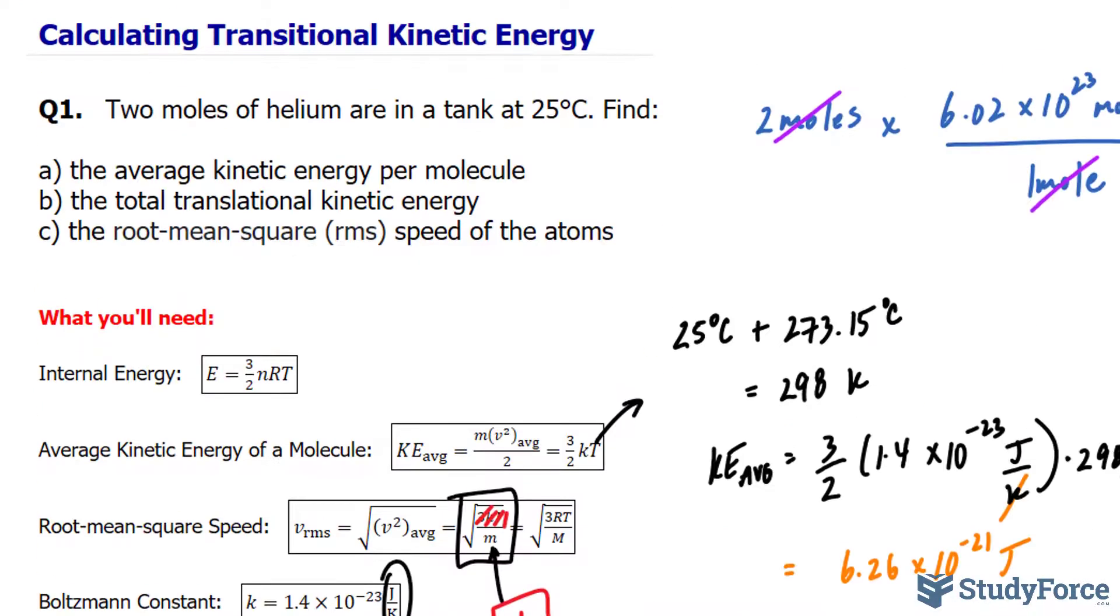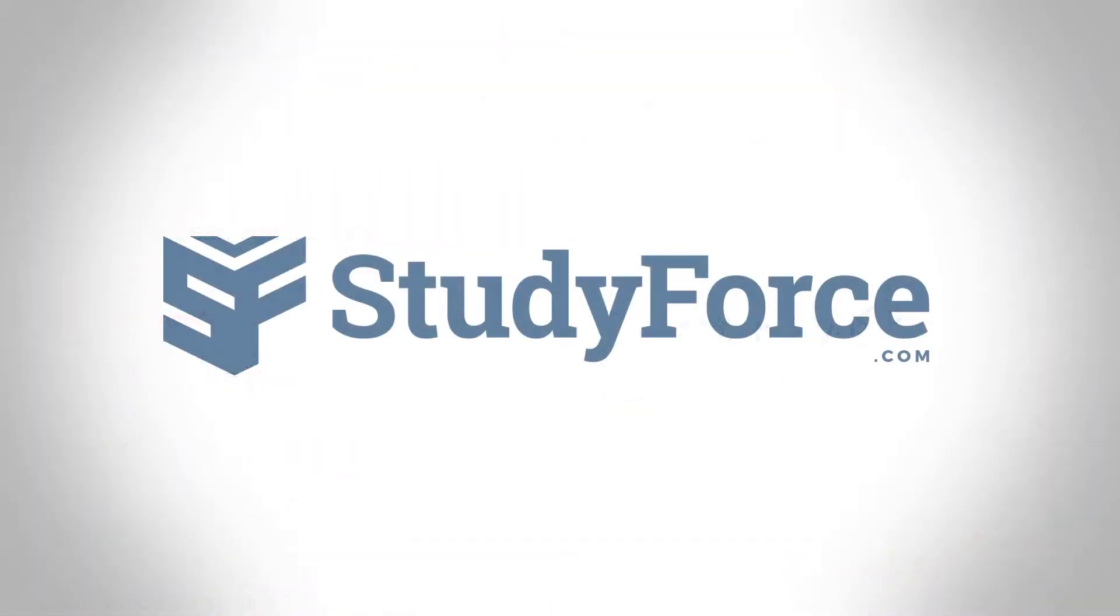And there you have it. Now you know how to calculate the average kinetic energy, total transitional kinetic energy, and the root mean squared of atoms. Thanks for watching.